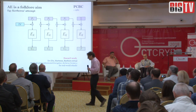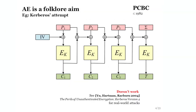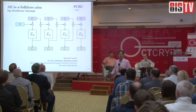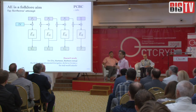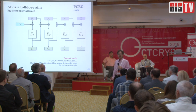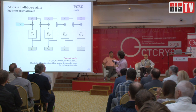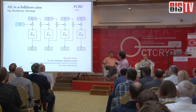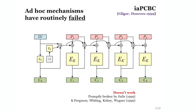The origins of authenticated encryption are really folklore. Within the early 80s, for example, there were schemes clearly designed to deliver authenticated encryption — they usually did a terrible job of this. This is the mechanism in Kerberos version 4; it completely doesn't work but it persisted nonetheless. In fact, nothing of this form where you have a non-cryptographic checksum and do some kind of chaining mode will ever work.